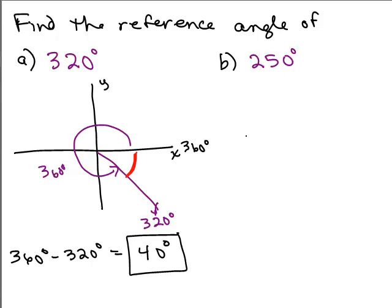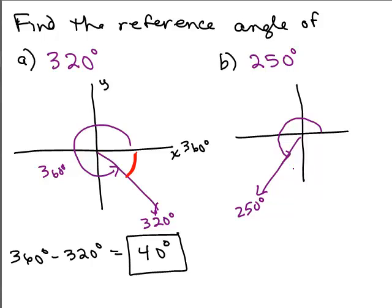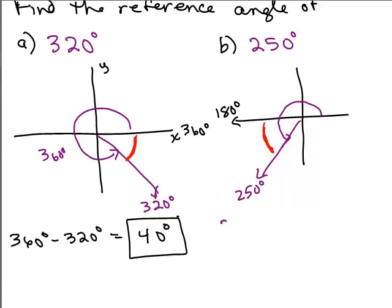Let's try 250 degrees. Where is 250 degrees? That's over in quadrant 3 somewhere. We want to find the acute angle that makes with the x-axis. How many degrees is it over to the x-axis from the origin? It would be 180 degrees. So we just subtract — bigger minus smaller: 250 minus 180 equals 70 degrees, and that is our reference angle.